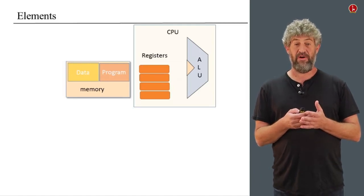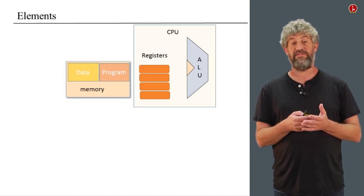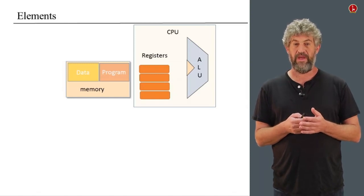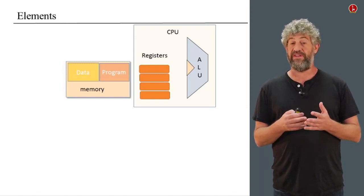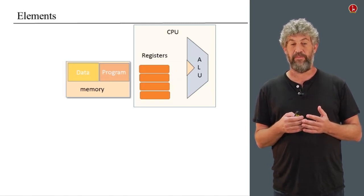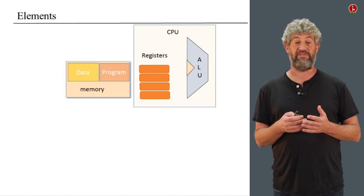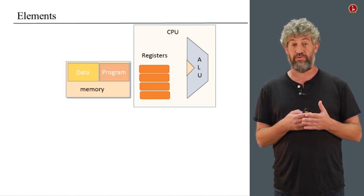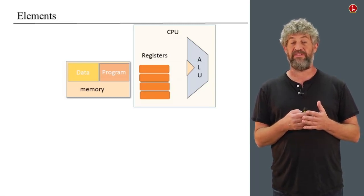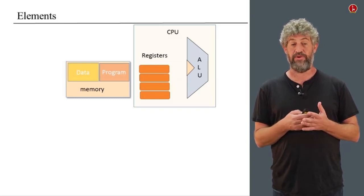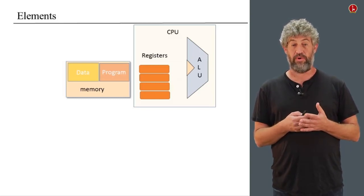The memory itself has two parts: the part that stores the program and the part that stores the data. To understand how all these things work together, it's best to consider the flow of data — what kind of information needs to pass within the computer from side to side, and how we control it.